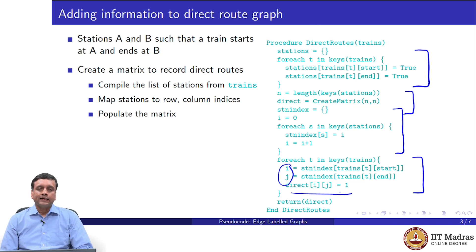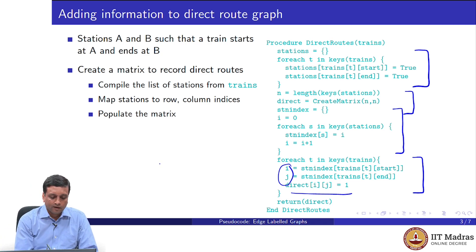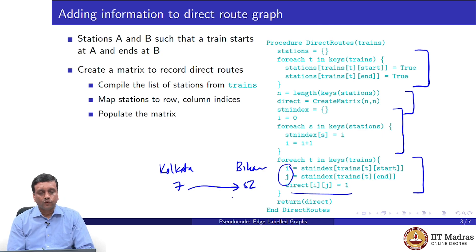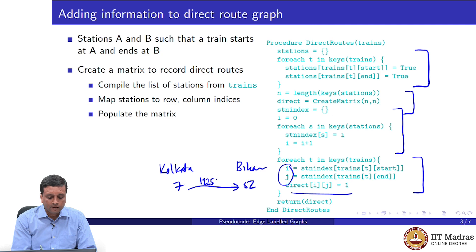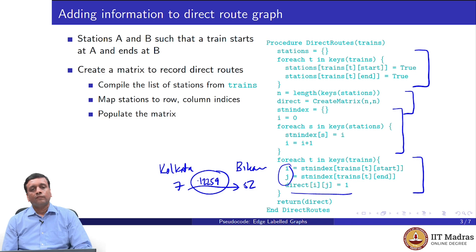This simple graph takes station numbers 0 to n minus 1 as nodes and draws an edge from i to j if there is a direct train from i to j. But once we have drawn this direct edge from i to j, we do not know which train it was, or if there were more than one train. So what if we want to record this information? For example, if Kolkata is station 7 and Bikaner is station 52, we would just have drawn an edge from 7 to 52, but we want to say that this edge is serviced by train 12259.